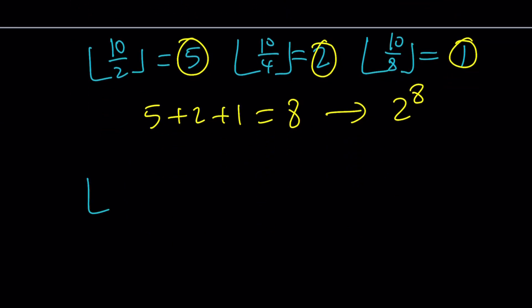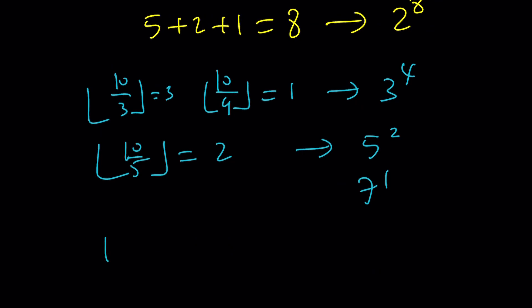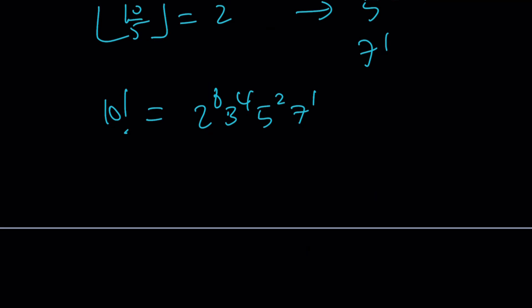Let's go ahead and take a look at the 3s, same way. 10 over 3, 10 over 9. Again, you're going to do the floor division. This is 3, this is 1. That gives you 3 to the 4th power. And then you do the same thing with the 5. 10 over 5. You can't do 10 over 25 because 25 is large. I mean, you can, but that's just going to give you 0. So you just have to go with 5 to the 2nd, and eventually 7 to the 1st. Put it together, 10 factorial, one more time, is going to be 2 to the 8th, 3 to the 4th, 5 to the 2nd, and 7 to the 1st.